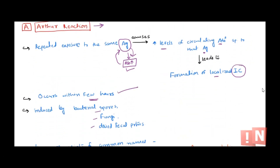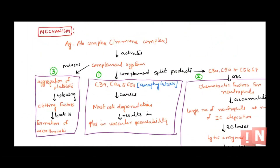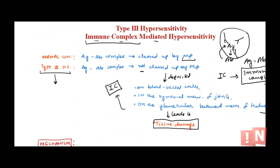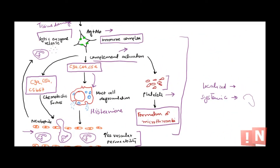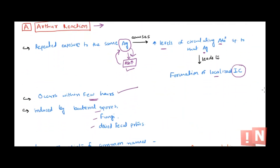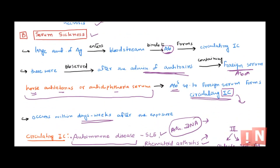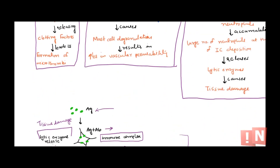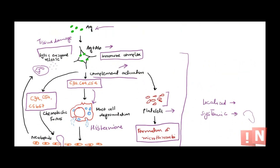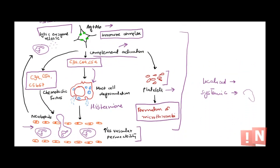So that's type 3 hypersensitivity — we've covered the definition, the basic mechanism of complement activation leading to mast cell degranulation, neutrophil recruitment, lytic enzyme release, and microthrombus formation, as well as whether it is localized (Arthus reaction) or systemic (serum sickness). The mechanism is the same; what differs is where the tissue damage occurs.